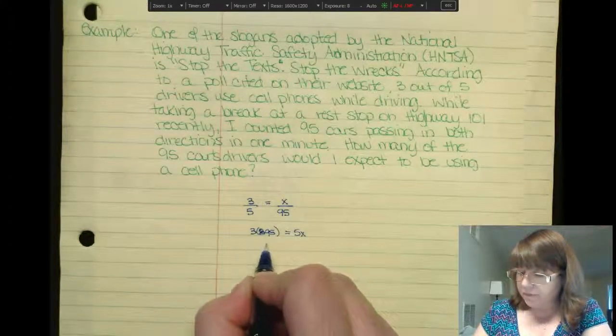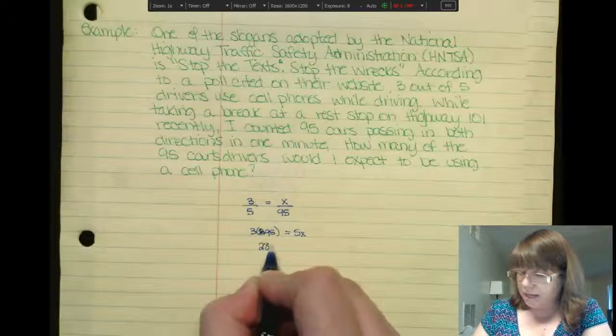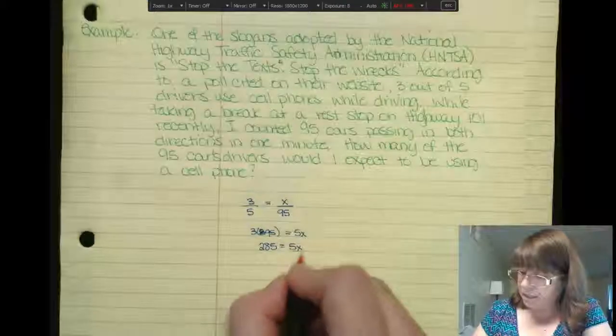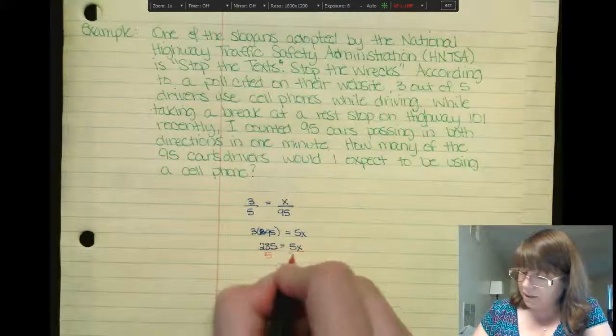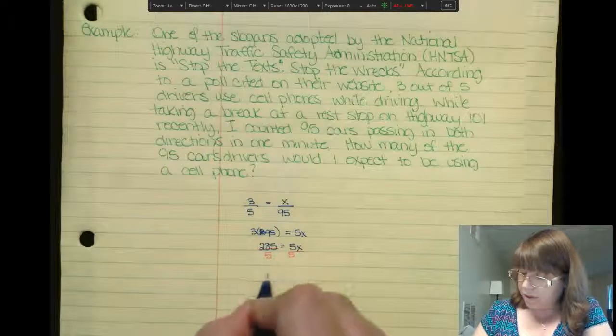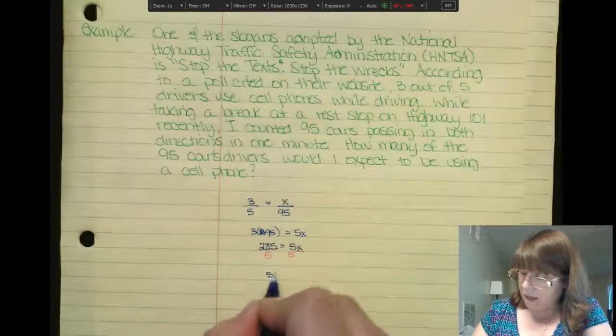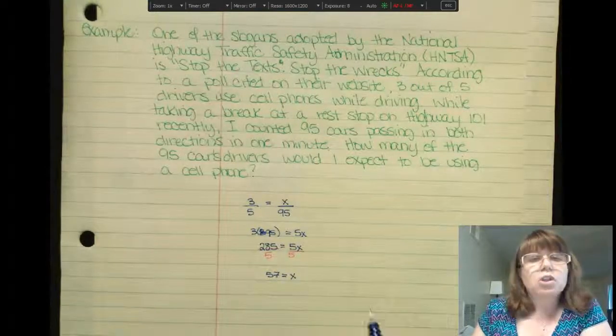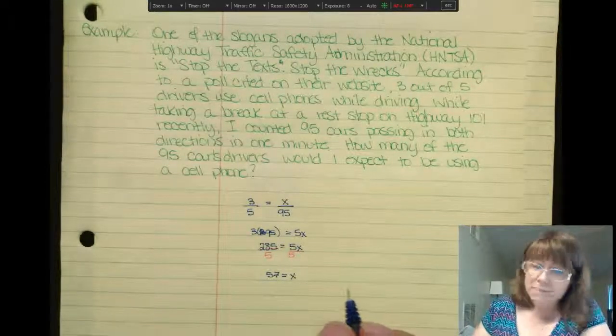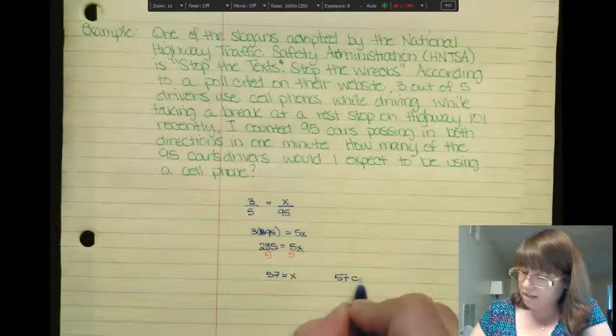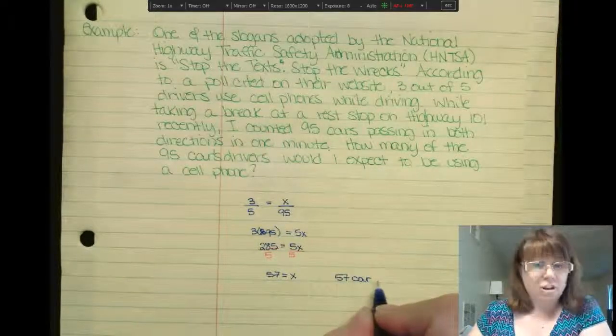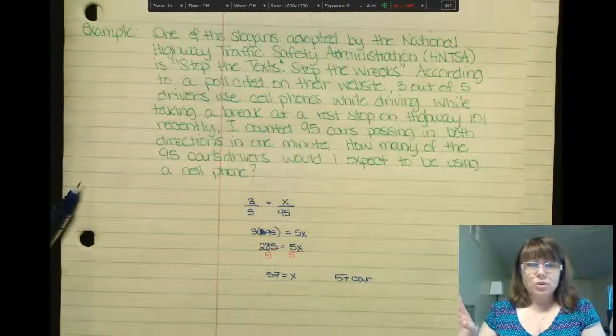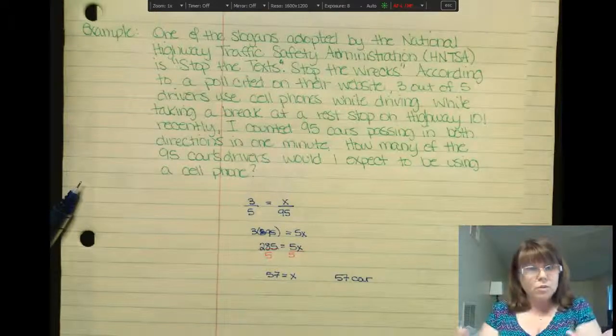And all I need to do is divide each side by 5. And I will have 5 and 35 is 57 cars should be using your phone. Or I would expect 57 cars or the car's drivers using their phone. So think about all the things that you can do in the outside world to use what you know now in math.